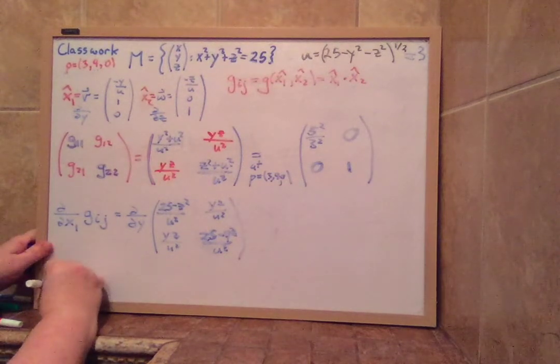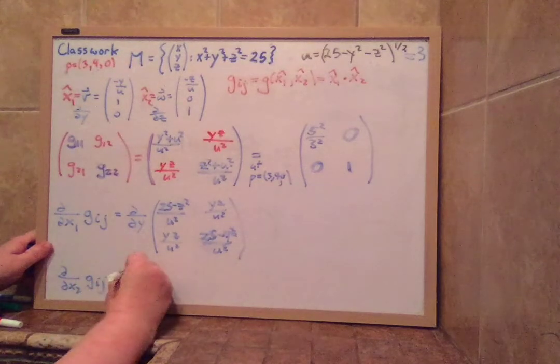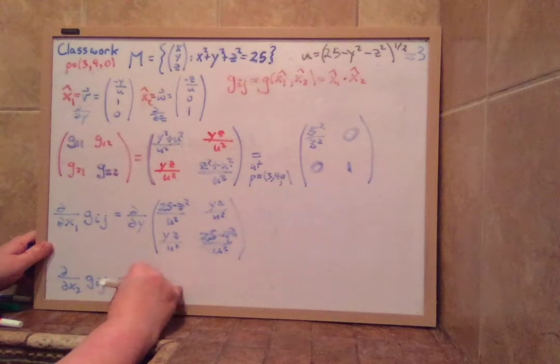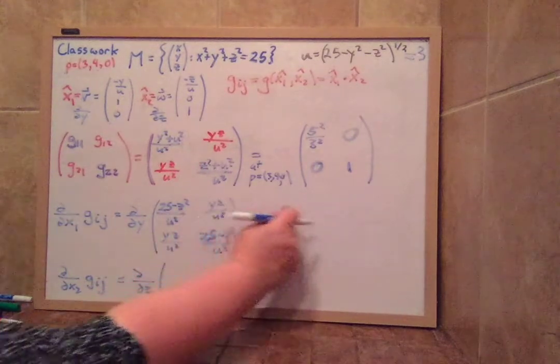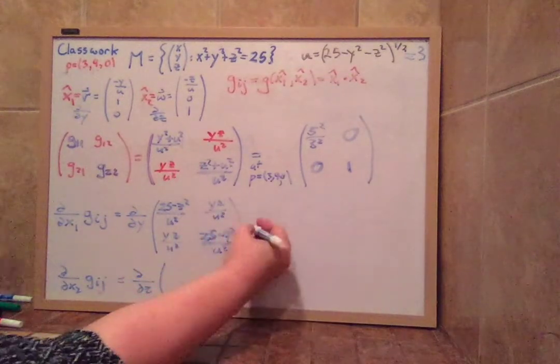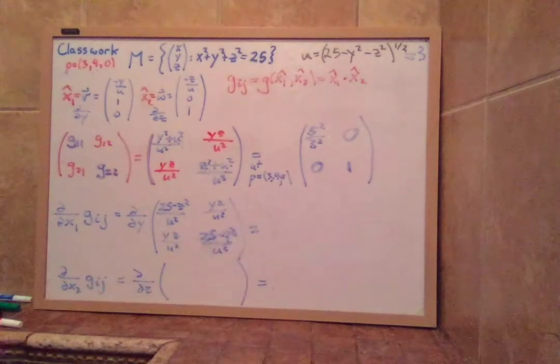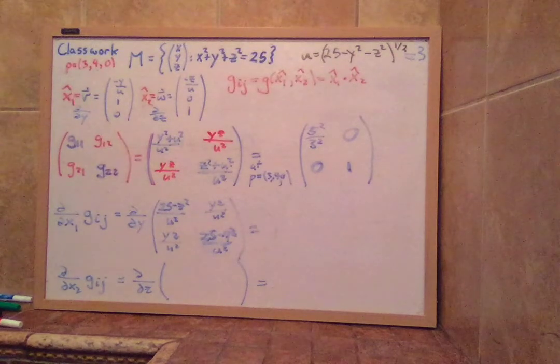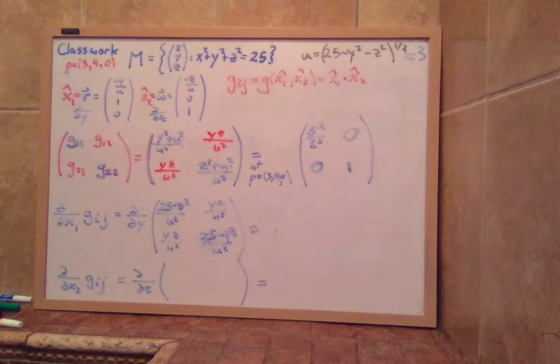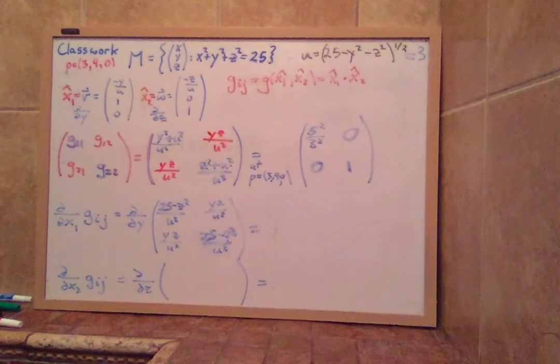And we also have to find d/dx2 of gij, which is equal to d/dz of all four of these entries. And then you will get an answer here and an answer here. Now that's going to take me a little time, so I think it's better if I end the video and just write in the answer since everybody knows how to take derivatives. So let me just photo this and I will stop the video and then finish the video.